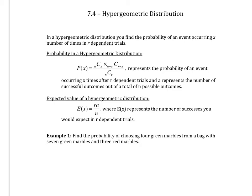And A represents the number of successful outcomes out of a total of N possible outcomes. So we have some new variables here.